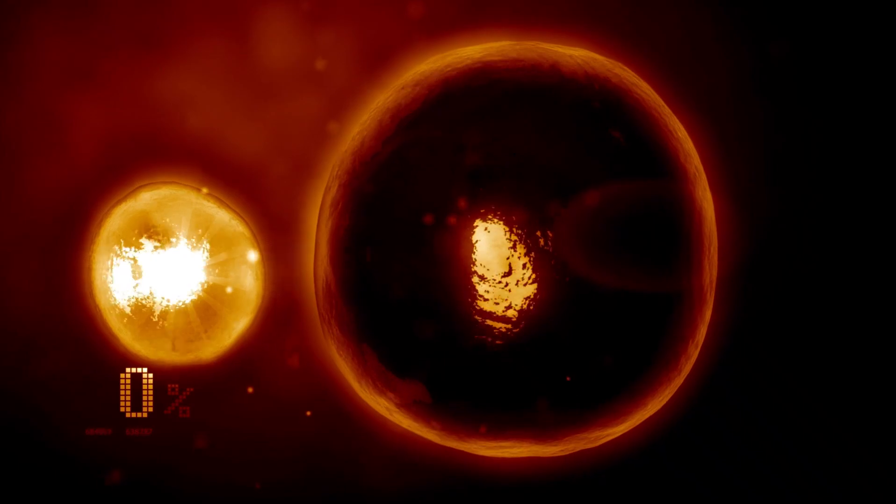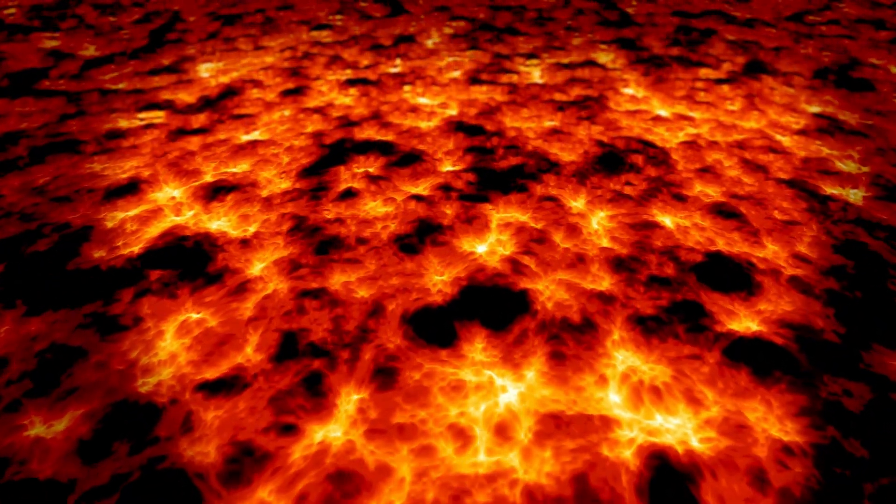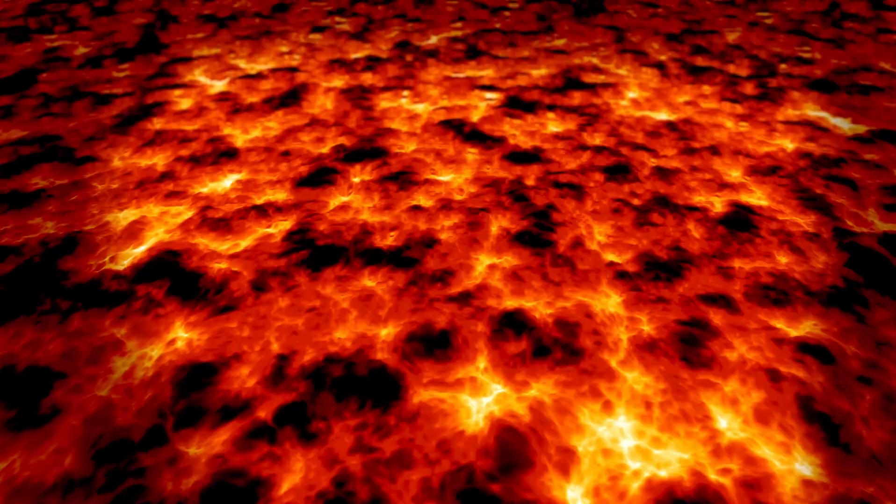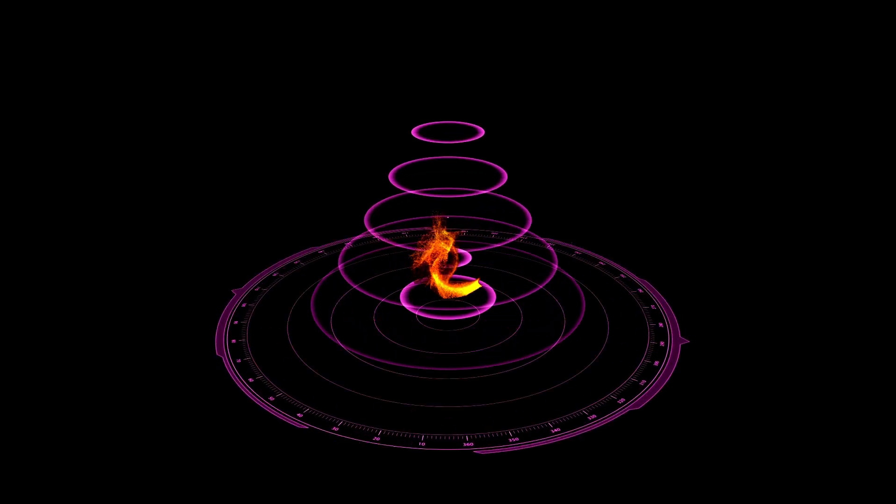Betelgeuse's pulsations are caused by a process called convection, in which hot gas rises and cooler gas sinks. This motion creates waves that travel through the star's atmosphere, causing it to expand and contract.